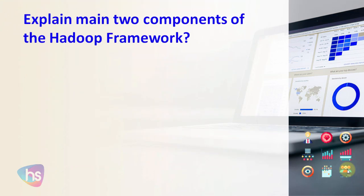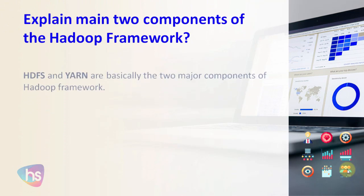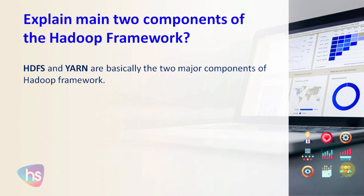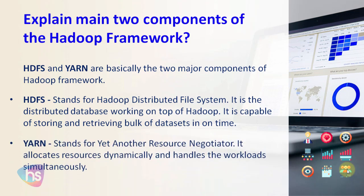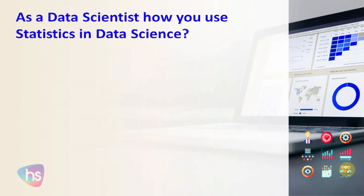Explain the main two components of the Hadoop framework. The two major components are HDFS and YARN. HDFS stands for Hadoop Distributed File System — it is a distributed database working on top of Hadoop, capable of storing and retrieving bulk datasets in a single operation. YARN stands for Yet Another Resource Negotiator — it allocates resources dynamically and handles multiple workloads simultaneously.